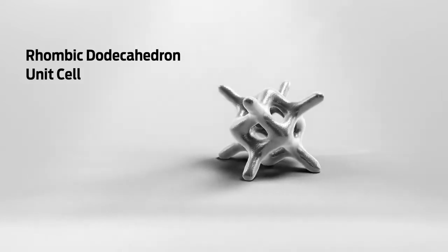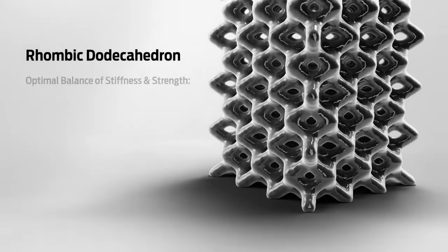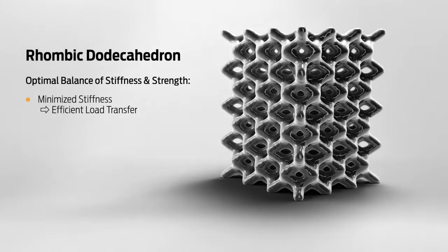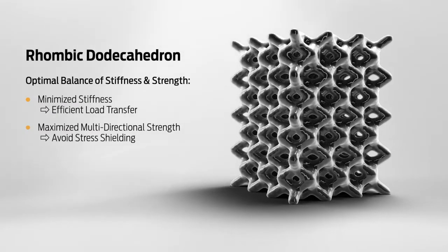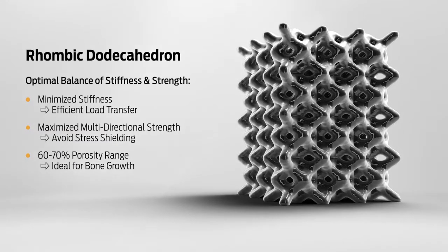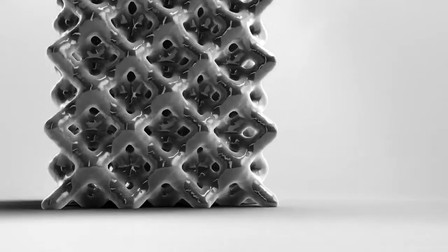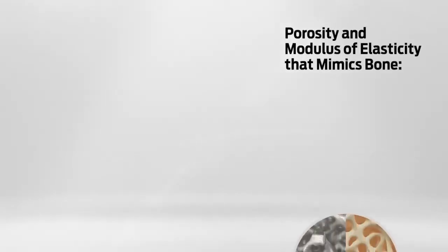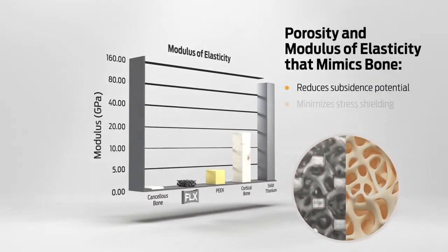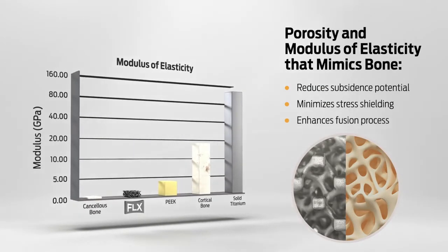This particular unit cell was chosen for its optimal balance of reduced stiffness and increased strength in an ideal porosity range to improve osteopromotive properties, resulting in a bone-like modulus of elasticity that this proprietary fuse-through matrix could only achieve via 3D printing technology.